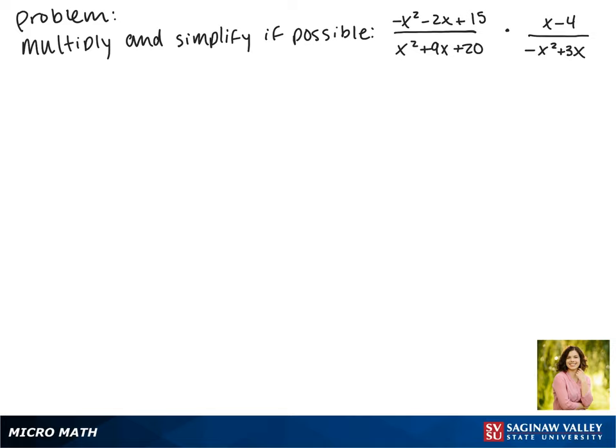Today we'll be multiplying the expression negative x squared minus 2x plus 15 over x squared plus 9x plus 20, times x minus 2 over negative x squared plus 3x, and simplifying if possible.